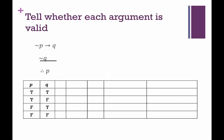Let's look at some examples. We want to decide whether this argument is valid or not — remember, it's valid if that final column, the implication, is a tautology. Looking at this, we have two premises. Here's premise one, here's premise two, and here's our conclusion. I put a bunch of columns here — let's make sure we agree on the number. We need P, Q, not P, not Q, not P then Q as premise one, a conjunction of the premises, and the conjunction of the premises leading to the conclusion.